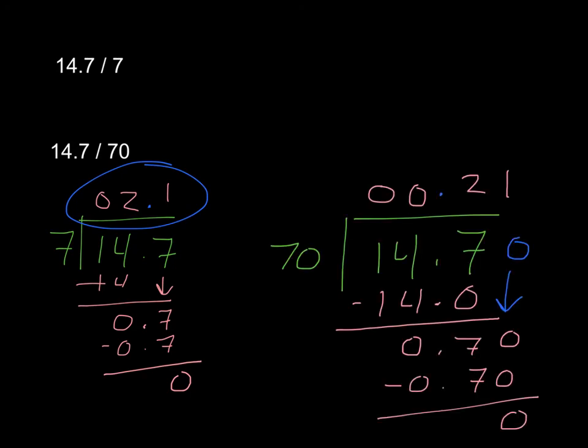And when I solve 14 and 7 tenths divided by 70, I do see that my solution, my quotient, is 21 hundredths. And I see that my reasoning was correct, because I'm adding a 0 here. I am moving the decimal one more place over. So I have 1 tenth of what I did for the other problem.